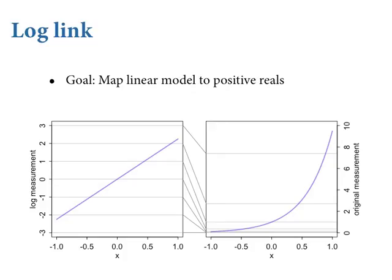Let's look at the log link now. The same kind of setup: the linear model is on the left-hand graph and the vertical scale is the log measurement — we've taken some original measurement like meters and logged it. What the log link implies is an exponential relationship between the value of the predictor and the mean of the outcome — because the inverse of log is to exponentiate.